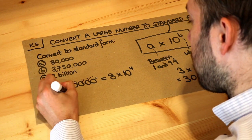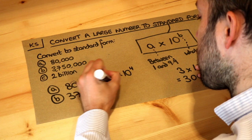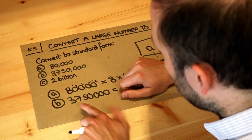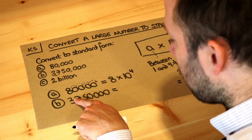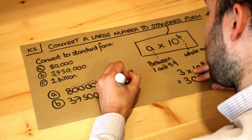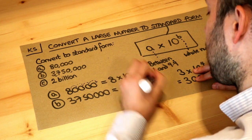So let's do the next one. What would be the number between 1 and 10? Well, if we put the decimal point here, it would be 3.75. That would be a number between 1 and 10, so it's 3.75 times 10 to the power of what?